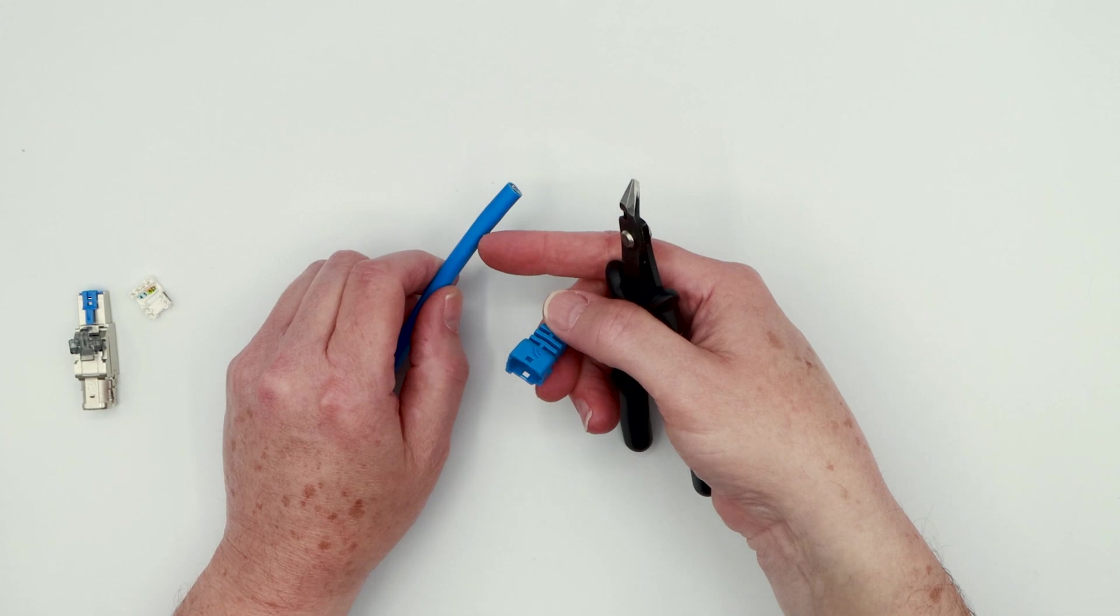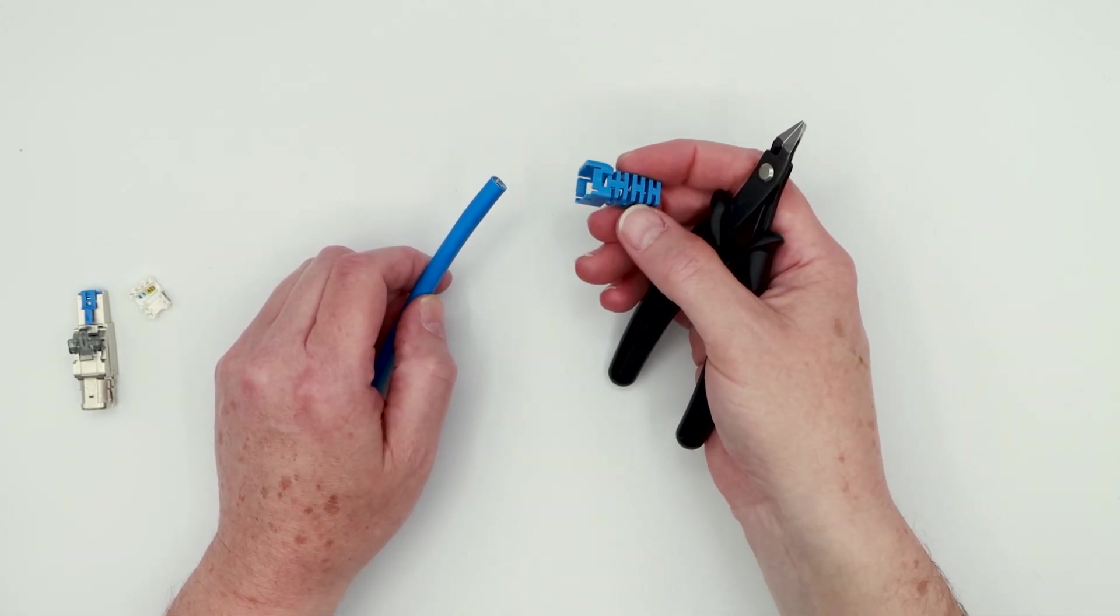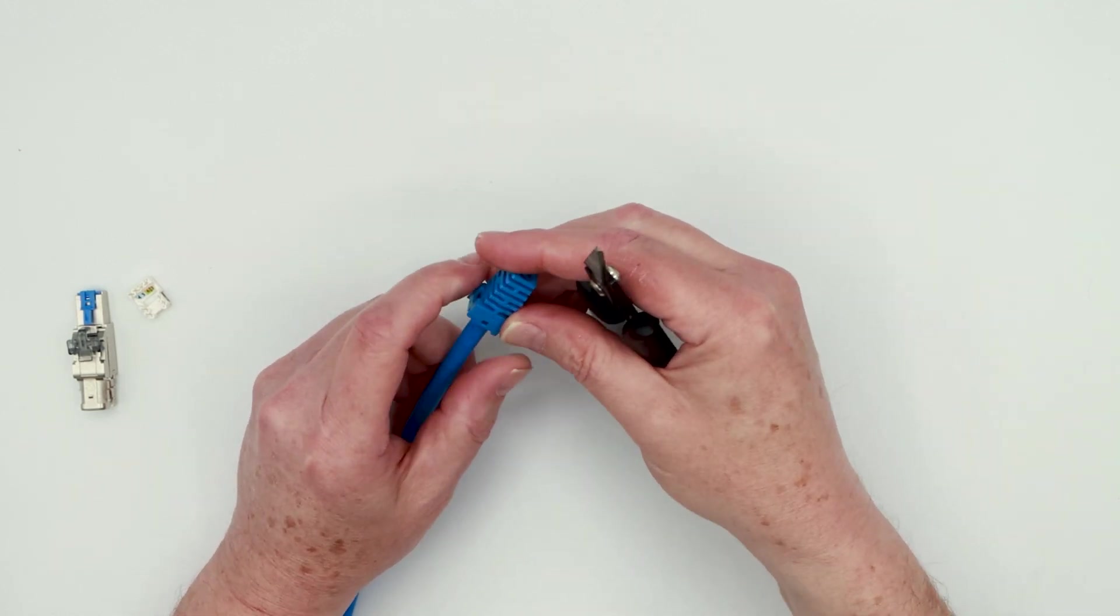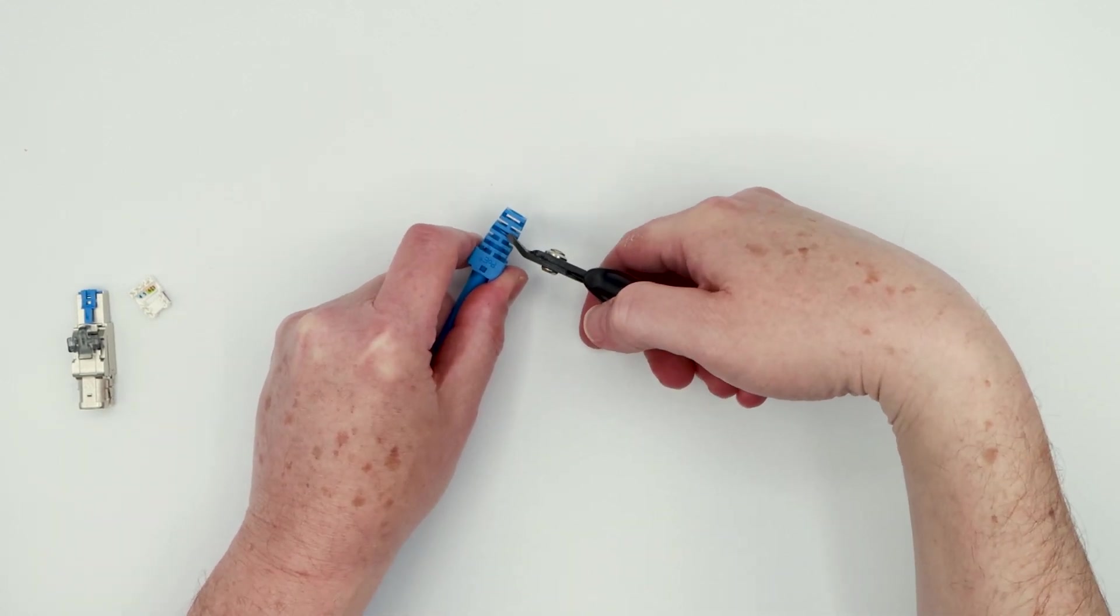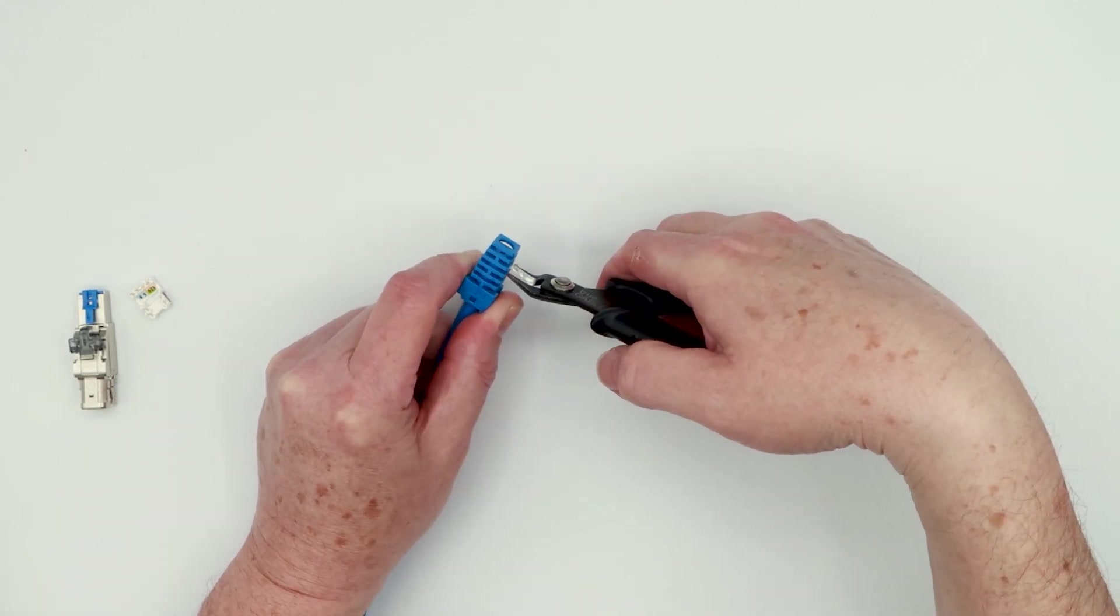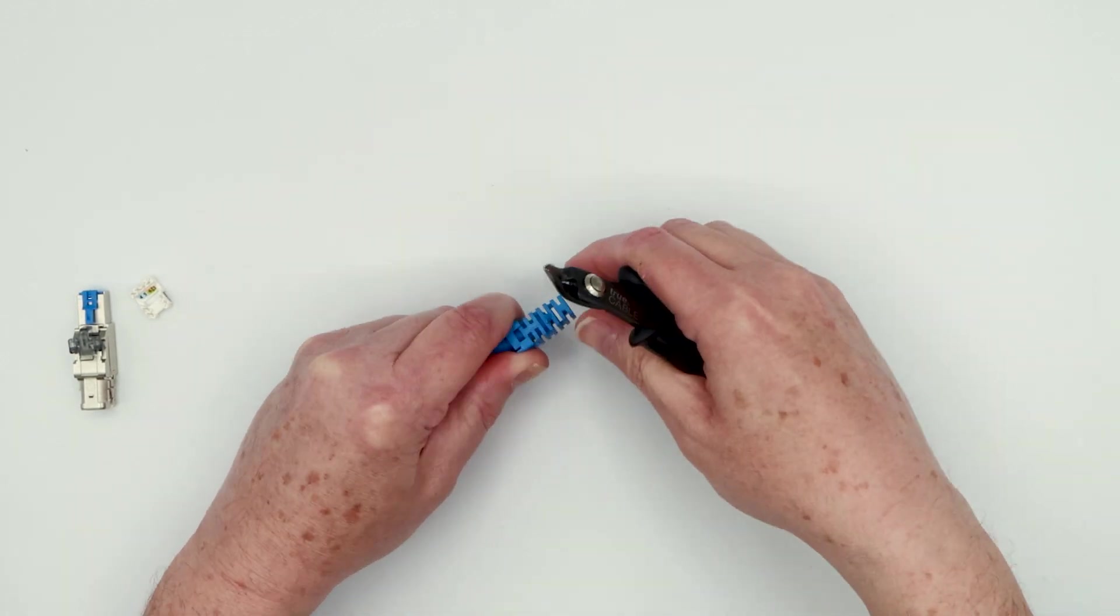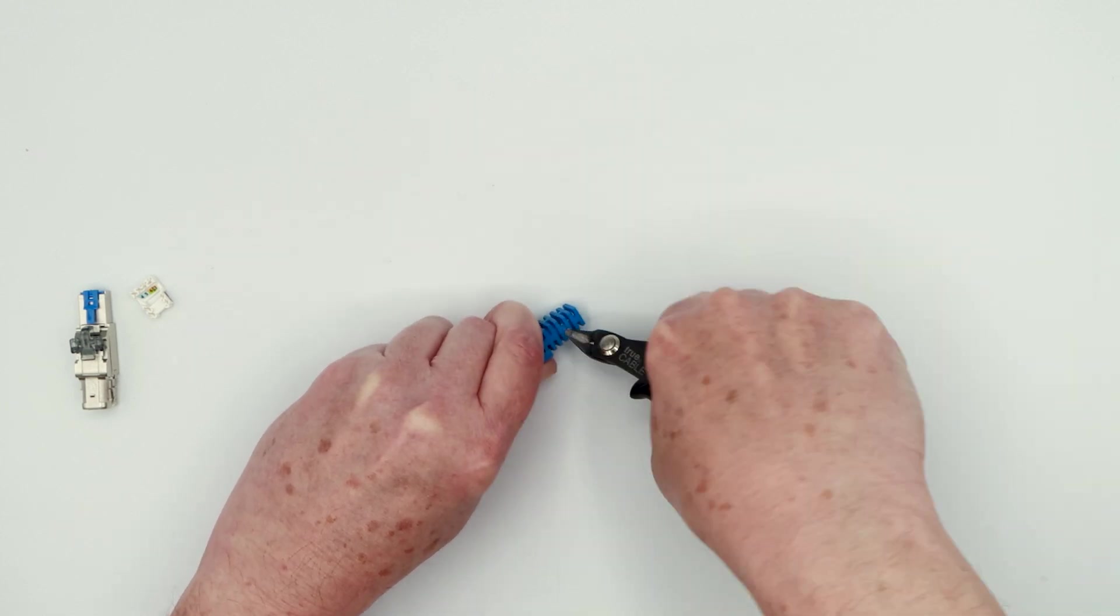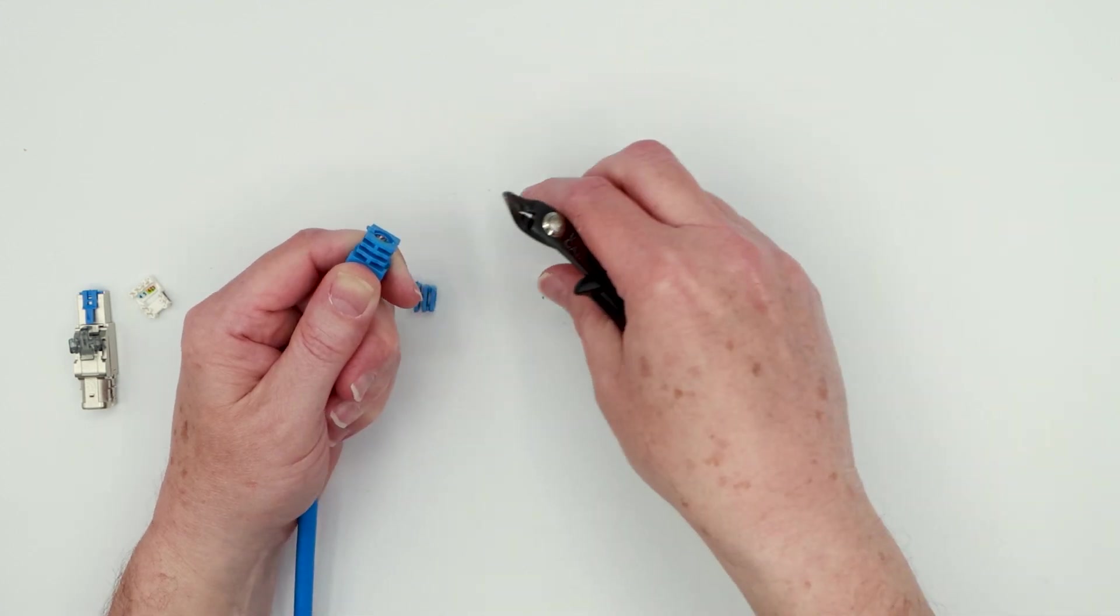Okay. So the easiest way to get to figure out exactly how much to remove here is to take this and reverse it and put it on the wrong way first. And it's going to stop at a certain point in this strain relief area. And so just simply make a couple of cuts where it stops with your clippers there. Might take a couple of snips. There we go. So that's how much we had to remove.